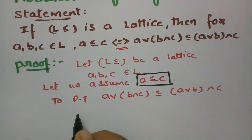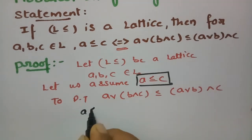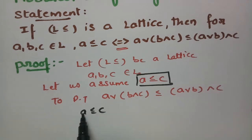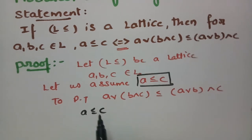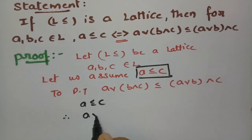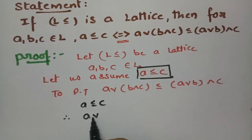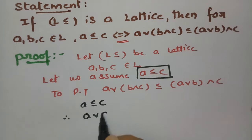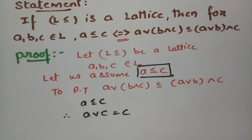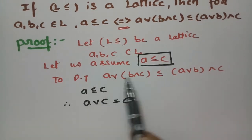According to A ≤ C, C is the greater element than A. Therefore, according to the definition of A∨C — since C is bigger — A∨C is equal to C. So now we need to prove this inequality.